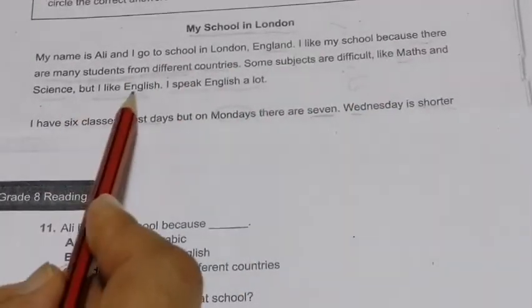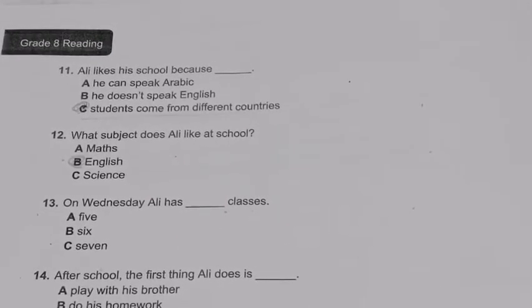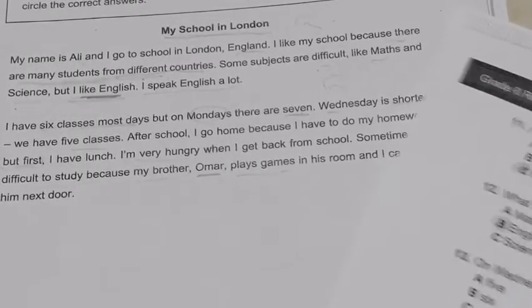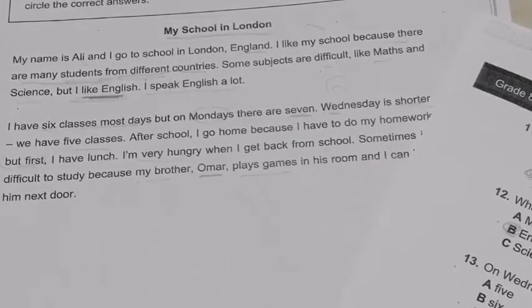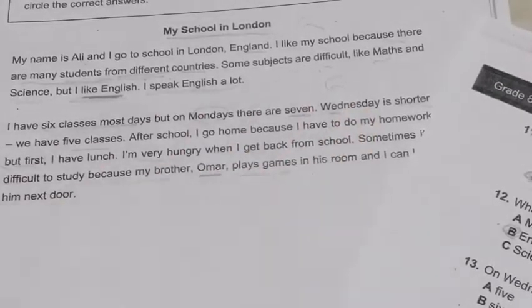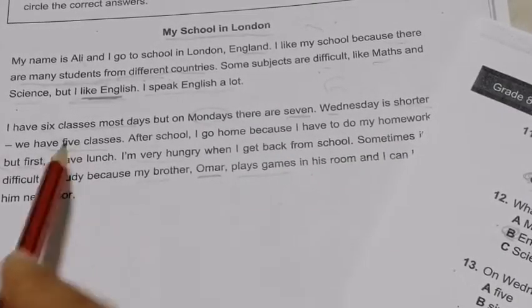Question 12: What subject does Ali like at school? You can see directly: 'Some subjects are difficult like math and science, but I like English — I speak English a lot.' So the answer is English. Question 13: On Wednesday, Ali has how many classes? Wednesday is shorter, so he has five classes. The answer is five.